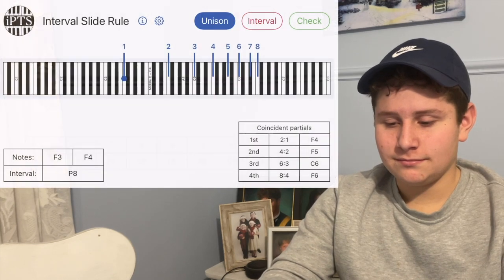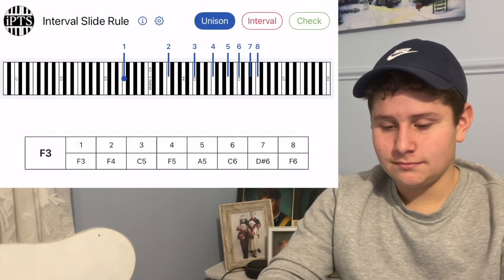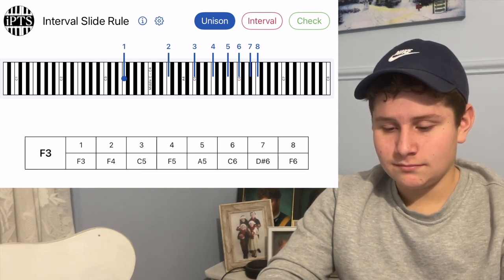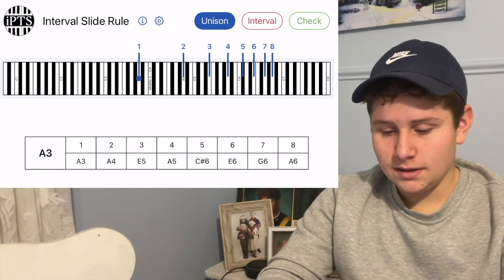And click on the unison. So what you're going to see is a bunch of vertical lines. These are the partials. The leftmost line is the first partial, and then you've got second, third, fourth, etc. And you should see on there the note names, a letter and a number.